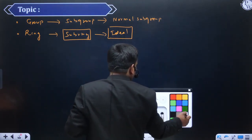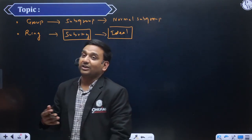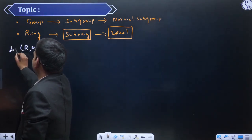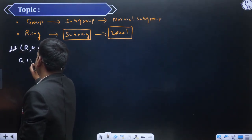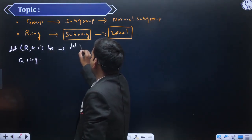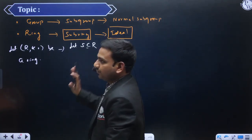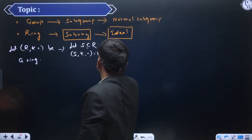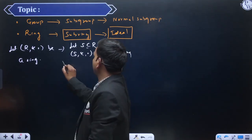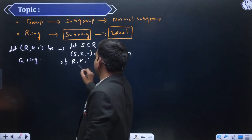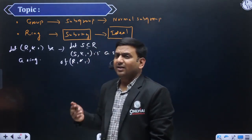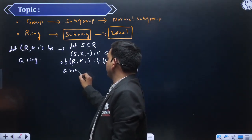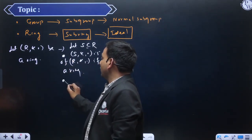So sabse pehle definitions ko hum ignore nahin kar sakte. Let R with star and dot be a ring. Ab maan lo koi non-empty subset S hai R ka. So S with respect to these operations is a subring of R, star, dot. Dekho, jaisa humne subgroup mein bhi padha tha ki woh khud mein group ki saari properties ko satisfy karna chahiye. Yeh to ho gayi iski definition.